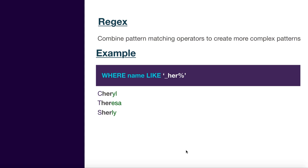The most powerful part is that you can combine both the percent and underscore wildcard characters to create complex patterns, which are generally called regex patterns. You may have heard developers mention complex regex patterns — this is what we're going to learn. There are much more complex patterns possible, but let's start with a simple example.